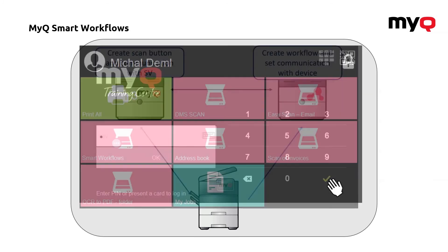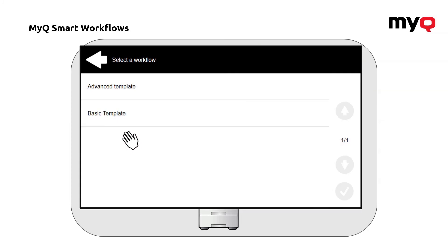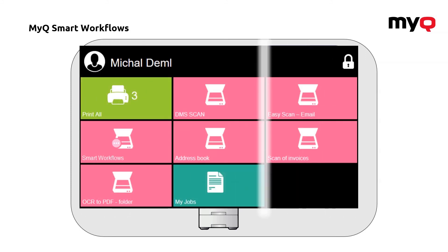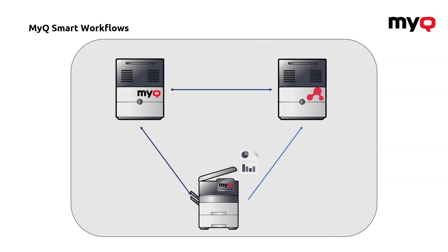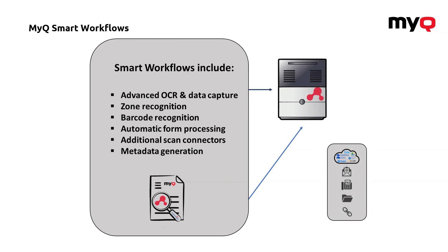The user simply logs in on the embedded terminal and presses the Smart Workflows button. They are given templates which the admin prepared. Everything is fully automated — the system scans the file and sends it to the engine working in the background. The engine finds the file, searches it, analyzes it, and based on its advanced OCR feature, data capture, zone recognition, or barcode recognition, it processes the file and delivers it to one of the locations defined in the workflow.